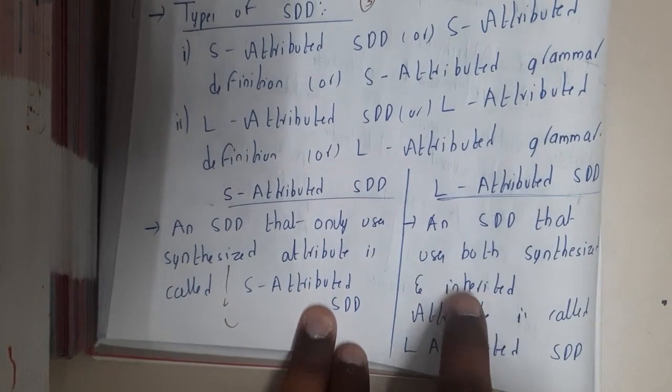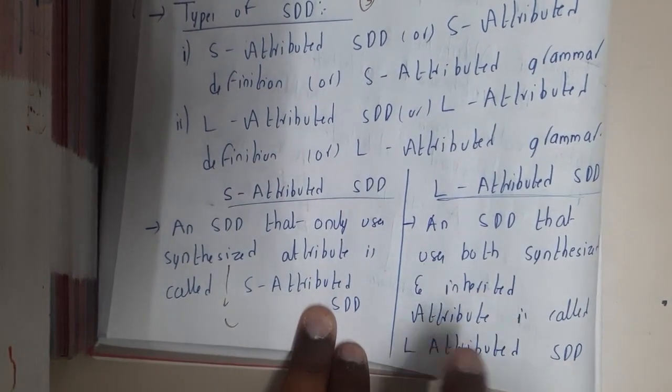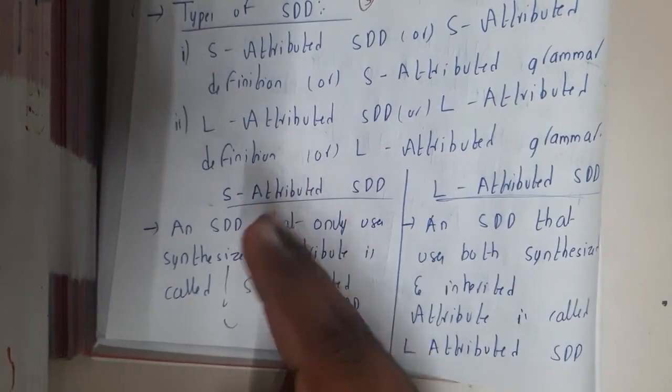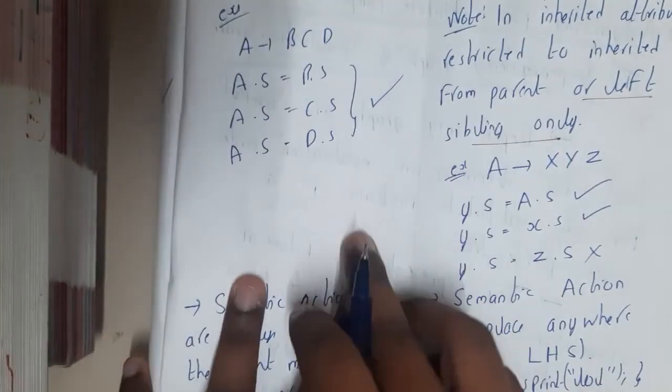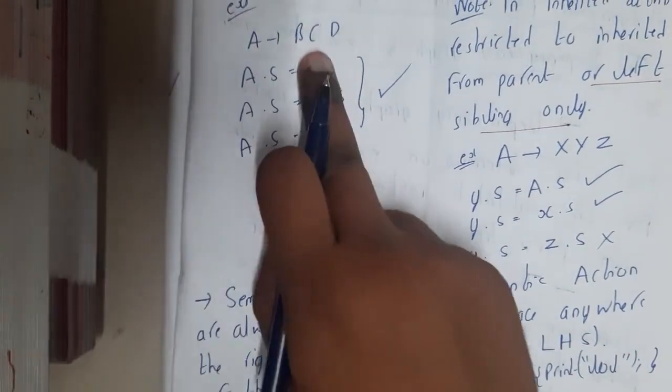But there is a restriction in inherited that it can take only the leftmost siblings. It can take only the left siblings. If you take a grammar example: A implies BCD,